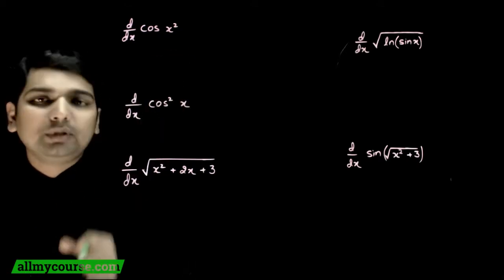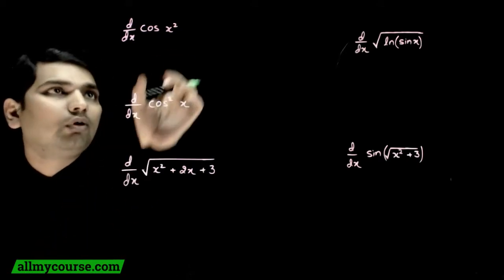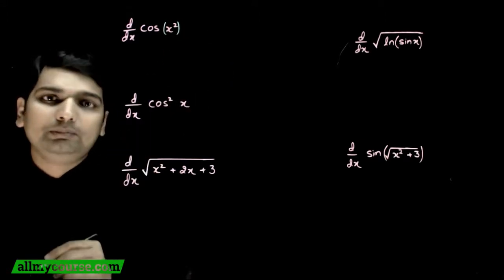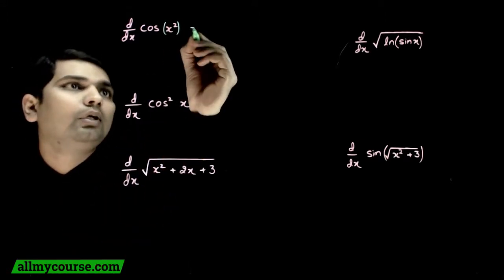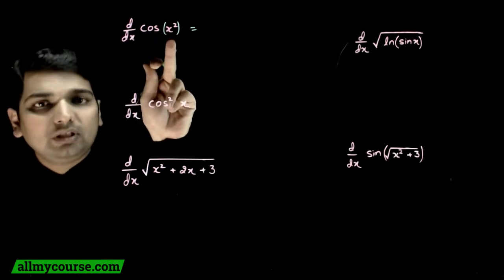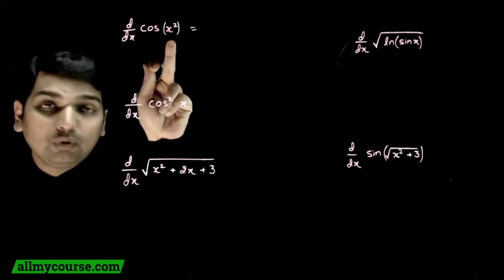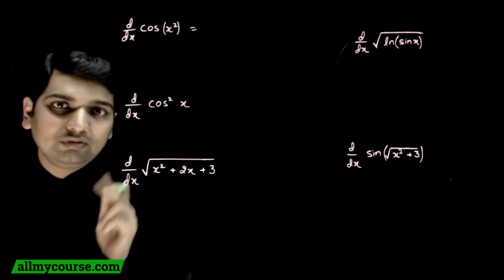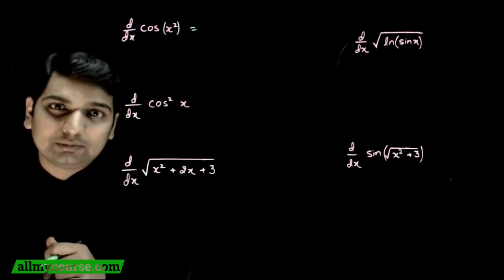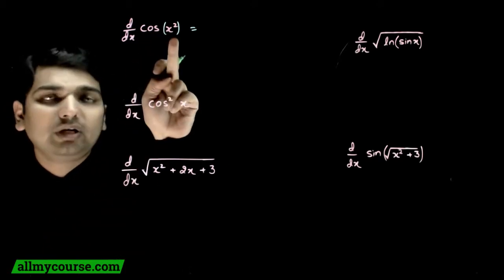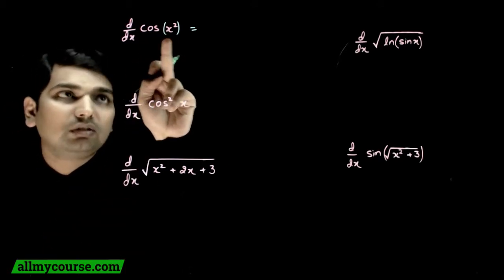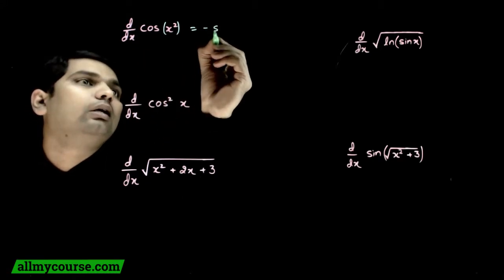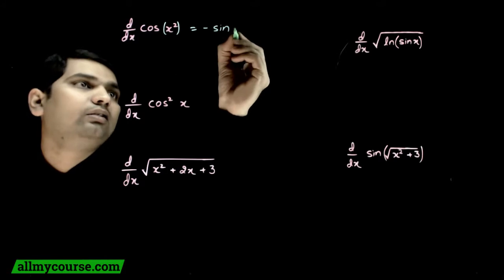To humara pahla example hai: differentiation of cos(x²). Cos ke andar aapka x ka square hai, isko differentiate karna hai. To cos ke andar kuch stuff hai — we don't have to worry about that. Hamein dekhna hai cos ka differentiation kya hoga. Cos x ka differentiation hai minus sin x. Isliye cos(x²) ka differentiation mein cos ki jagah minus sin aayega, aur stuff kya hai — x square.